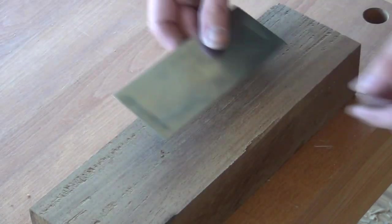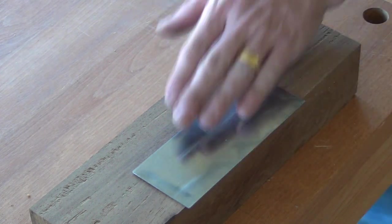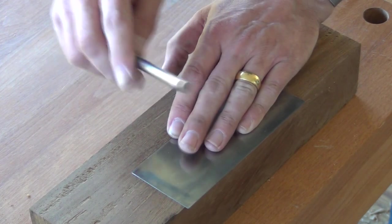If you want it a bit more aggressive, put a burr on it. Hold it off the edge of the bench or in a vise. Take your burnisher.